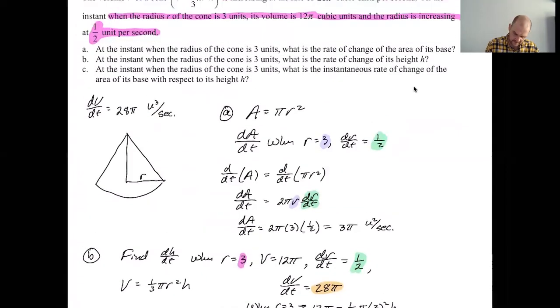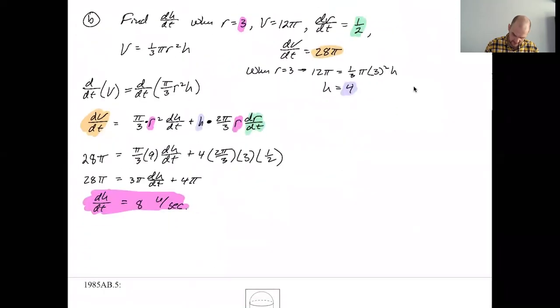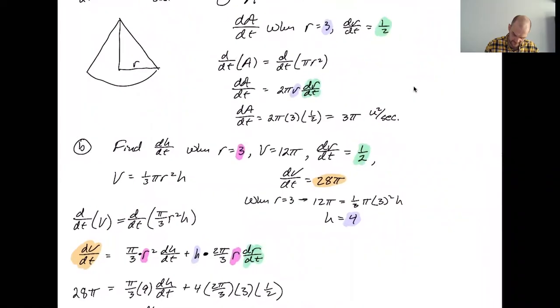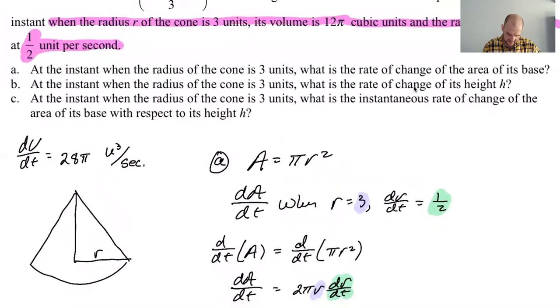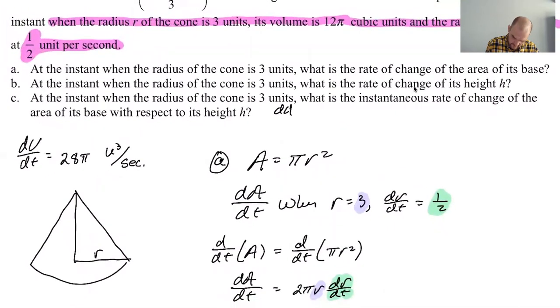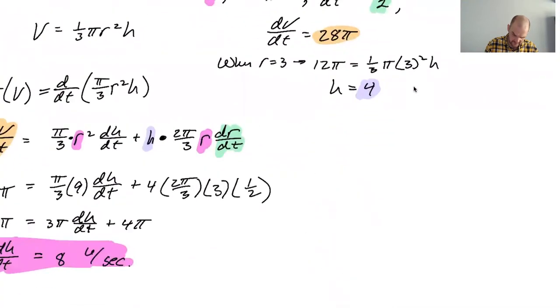And then c. Is c going to be like hard? Because if so, I'm not going to be able to fit it, but we'll see. At the instant when the radius of the cone is three, what is the instantaneous rate of change of the area of its base with respect to its height? The area, okay, so dA, dA, I'm going to try to find here. Rate of change of the area of the base, so that's a dA, but with respect to its height. So dA/dH is the question that I'm being asked.